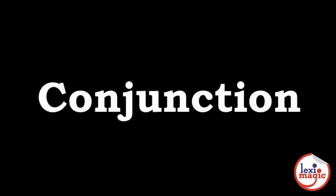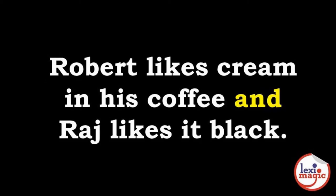A conjunction connects words or phrases. Example: 'Robert likes cream in his coffee and Raj likes it black.' In this example, the conjunction 'and' connects two independent clauses.